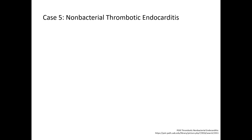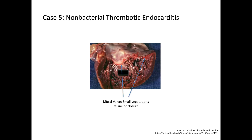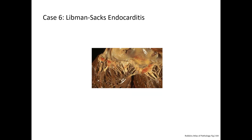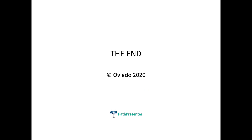Case 5 is non-bacterial thrombotic endocarditis, with small vegetations on the line of closure of the mitral valve. Case 6 is Libman-Sachs endocarditis. The mitral valve has small vegetations on the leaflets and on the chordae tendineae. Here are some of the vegetations on the leaflets, and here is one on the chordae tendineae.